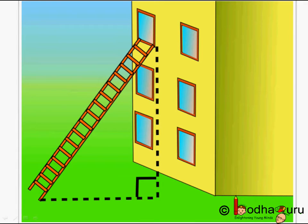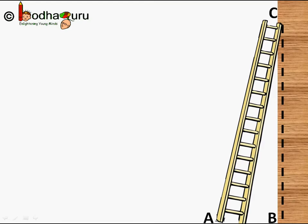But for that we need to understand how the value of various trigonometric ratios changes with the angle. Point A is the base of the ladder, point B is the base of the wall against which this ladder is leaning.